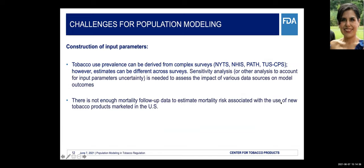Regarding challenges for the DPM model and other population models used in tobacco regulation: one challenge is constructing input model parameters. Tobacco use prevalence can be derived from multiple US nationally representative surveys — for instance NYTS for youth, NHIS for adults, PATH for both youth and adults, TUS-CPS, among others — but population estimates can differ across surveys when estimating tobacco use prevalence for different products. Therefore, sensitivity analyses or other analyses to account for input parameter uncertainty are needed to assess the impact of various data sources on model outcomes.